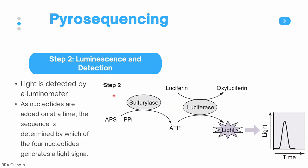The next step is luminescence and detection. Sulfurylase combines pyrophosphate and APS into ATP. This ATP is then used by luciferase to convert luciferin into oxyluciferin, and in this reaction light is produced. The light is detected by a luminometer. Nucleotides are added one at a time to each well, and the sequence is determined by which of the four nucleotides generates a light signal. For example, if light is detected when a guanine dNTP was added, then the next base in the sequence is guanine.